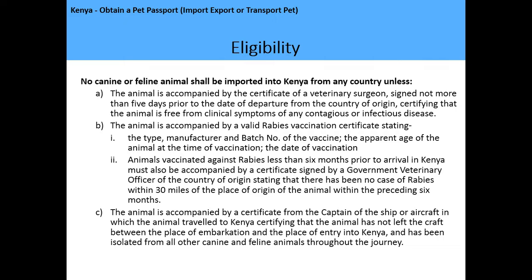An animal vaccinated against rabies less than six months prior to arrival in Kenya must also be accompanied by a certificate signed by a government veterinary officer of the country of origin, stating that there has been no case of rabies within 30 miles of the place of origin within the preceding six months. The animal must also be accompanied by a certificate from the captain of the ship or aircraft certifying that the animal has not left the craft between embarkation and entry into Kenya and has been isolated from all other canine and feline animals throughout the journey.